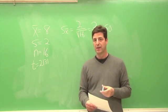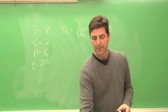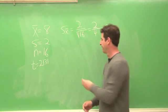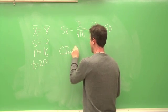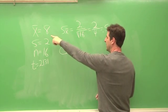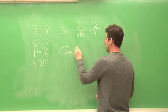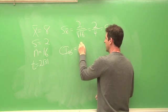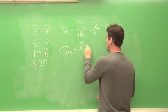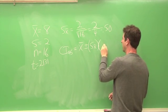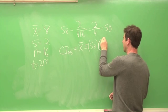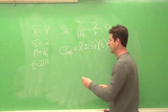Now we have all the pieces that we need to calculate the confidence interval for the mean. I'll just show the formula first. That's the formula, let's plug in the numbers.